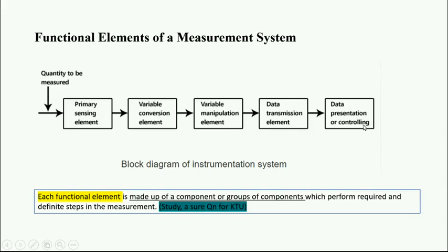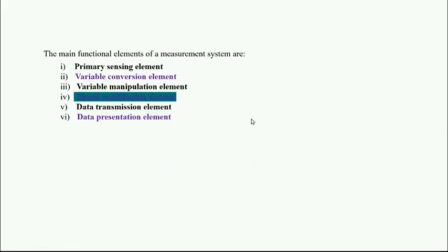This is a block diagram you must use for your examination. The other one needs somewhat complicated, this is very simple and easy to understand. The functional elements in a measurement system are primary sensing element, variable conversion element, variable manipulation element, and there is one signal conditioning element that will remove the noise from these parts, data transmission element, and data presentation element.